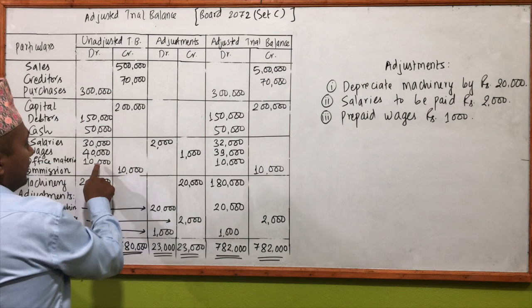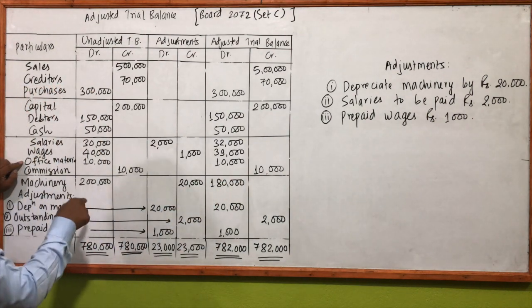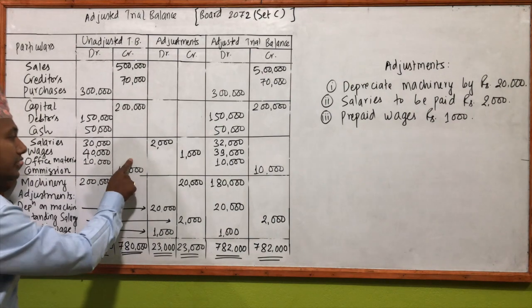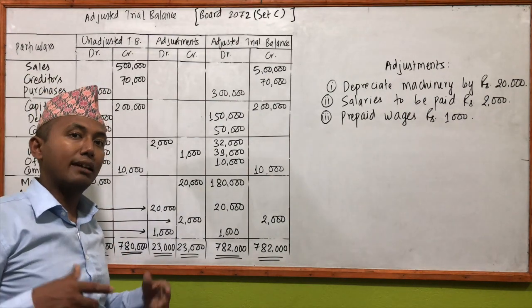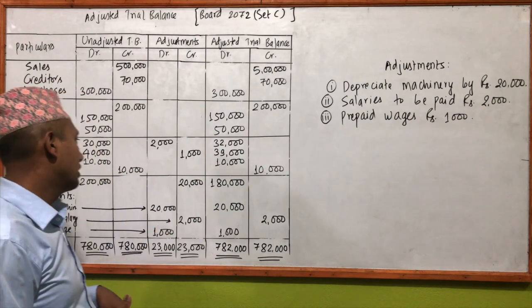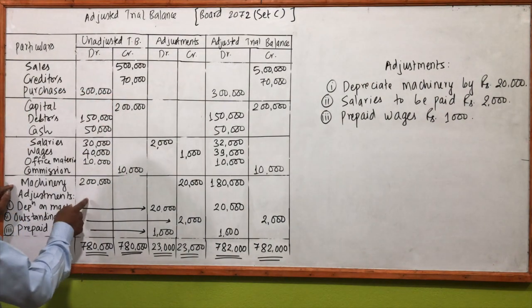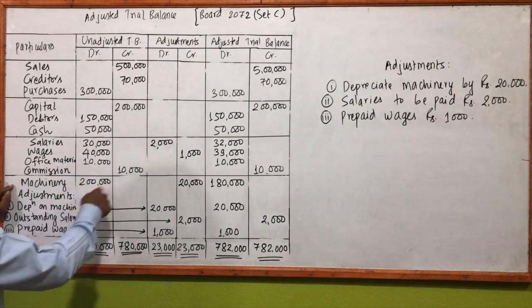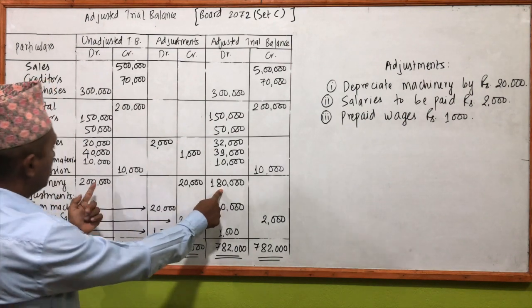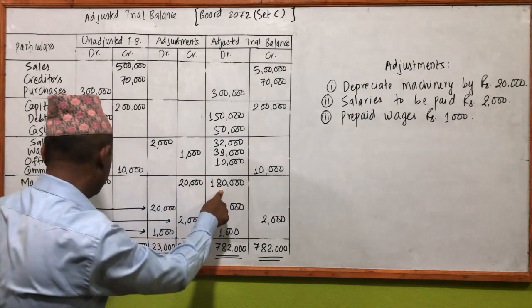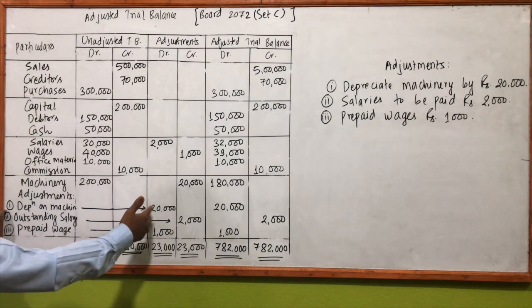If there's office material in your office, you have to record the debt entry. Then the commission income is on the credit side. There are no additional expenses beyond what is stated. The credit amount is 1,000,000. You have to write a credit for the third item and place the credit accordingly.